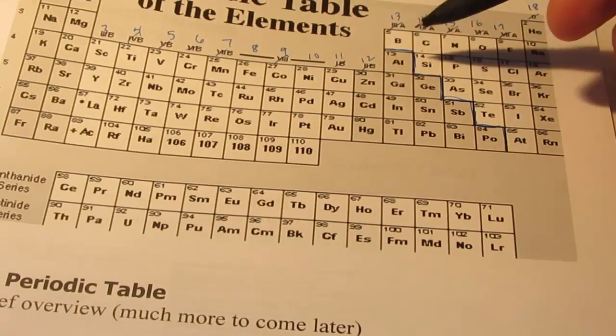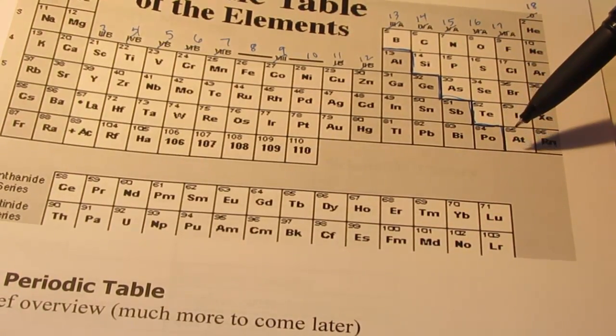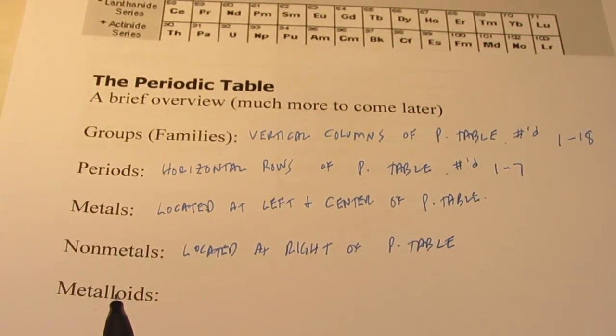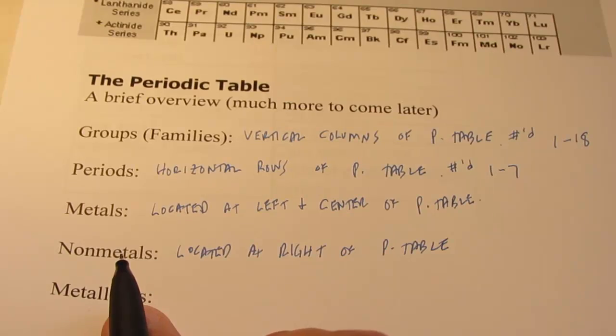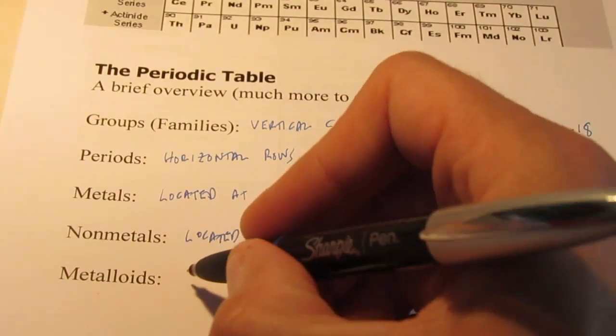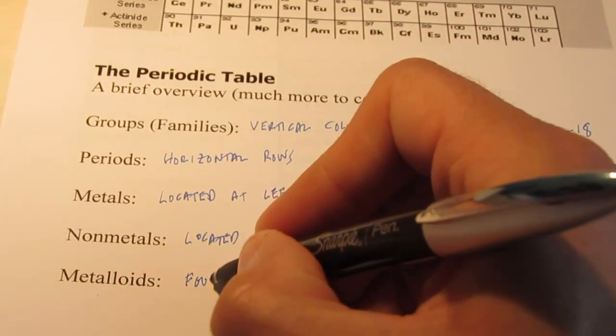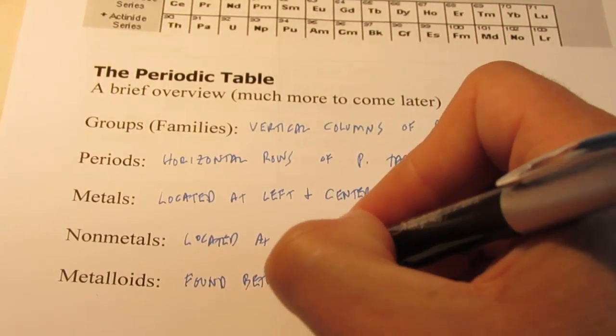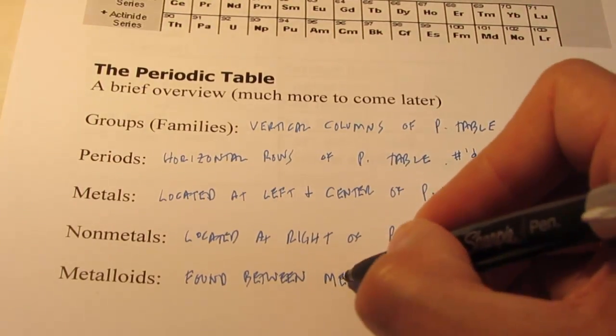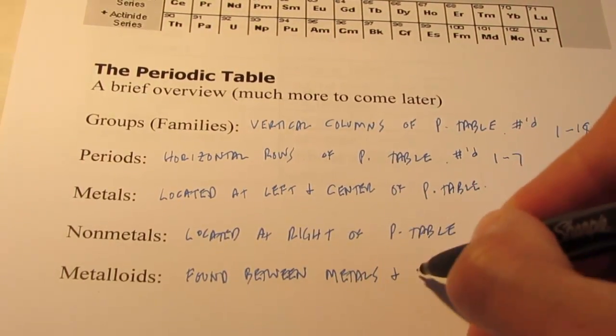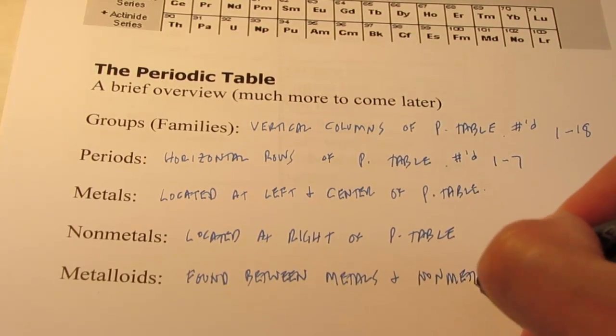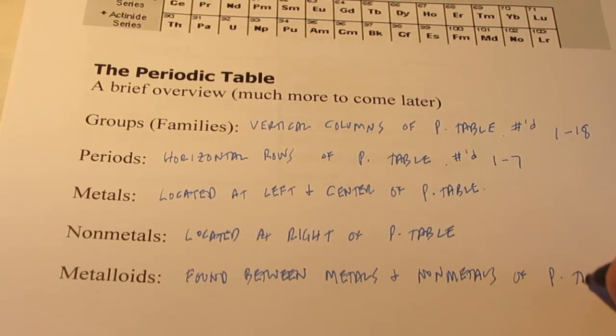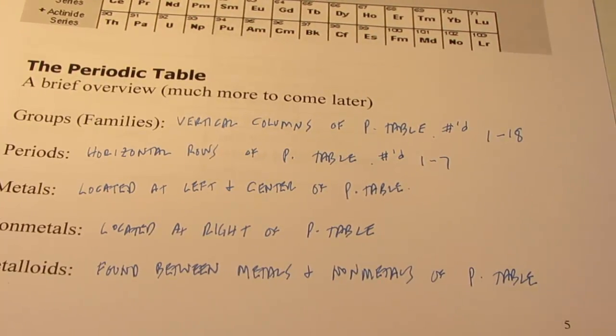Now, what about these that are right on the staircase? What do we call them? Well, these are called the metalloids. It turns out that metalloids are tweeners. They have properties of metals and non-metals. So, the metalloids are found between metals and non-metals of the periodic table.